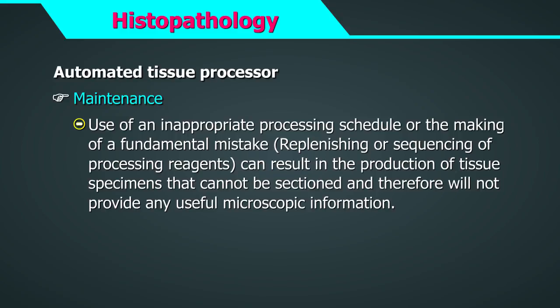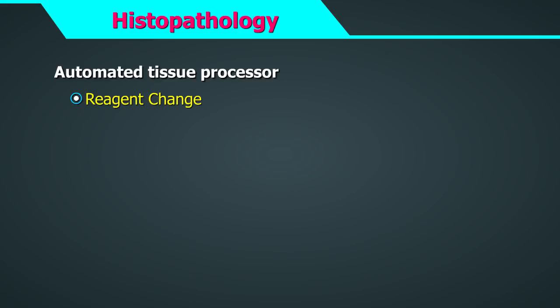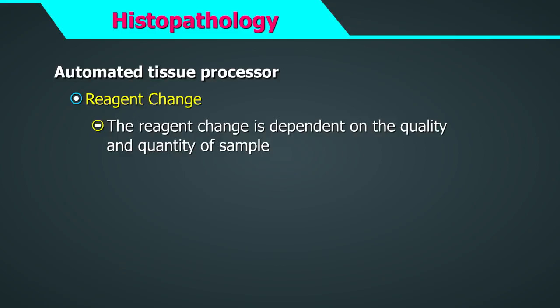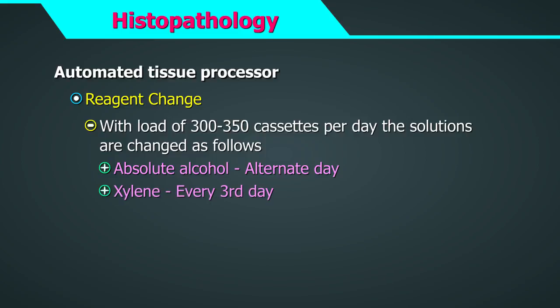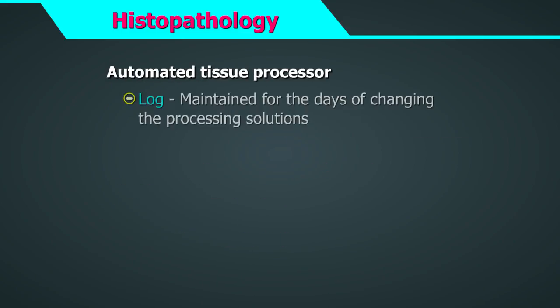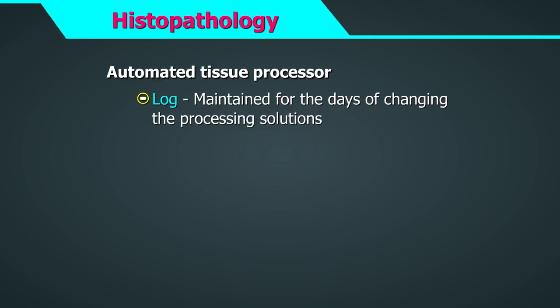Use of an inappropriate processing schedule or a fundamental mistake — perhaps in replenishing or sequencing of processing reagents — can result in tissue specimens that cannot be sectioned and will not provide any useful microscopic information. Reagent solutions should be changed depending upon the quality and quantity of samples processed. Symbolically, with a present load of 300 to 350 cassettes per day, the solutions need to be changed as follows: absolute alcohol in first container every alternate day, xylene every third day, and wax weekly. However, formalin needs to be changed every day. A log shall be created and maintained by the technician for the days of changing the processing solutions.